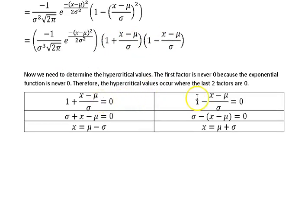Setting each of those equal to zero and rearranging those equations, we see that they do occur at the points that we're interested in: the mean minus the standard deviation and the mean plus the standard deviation.